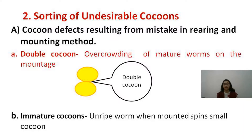Before taking cocoons to market, the farmer must remove all defective cocoons, because if defective cocoons appear in the sampling, the whole lot will be considered defective and fetch a lower price. Defects resulting from mistakes in rearing and mounting include double cocoons, which occur when overcrowding on the chandrika or other mountage causes worms to spin cocoons very close together, causing them to stick. Such double cocoons are not reliable and fetch less price.